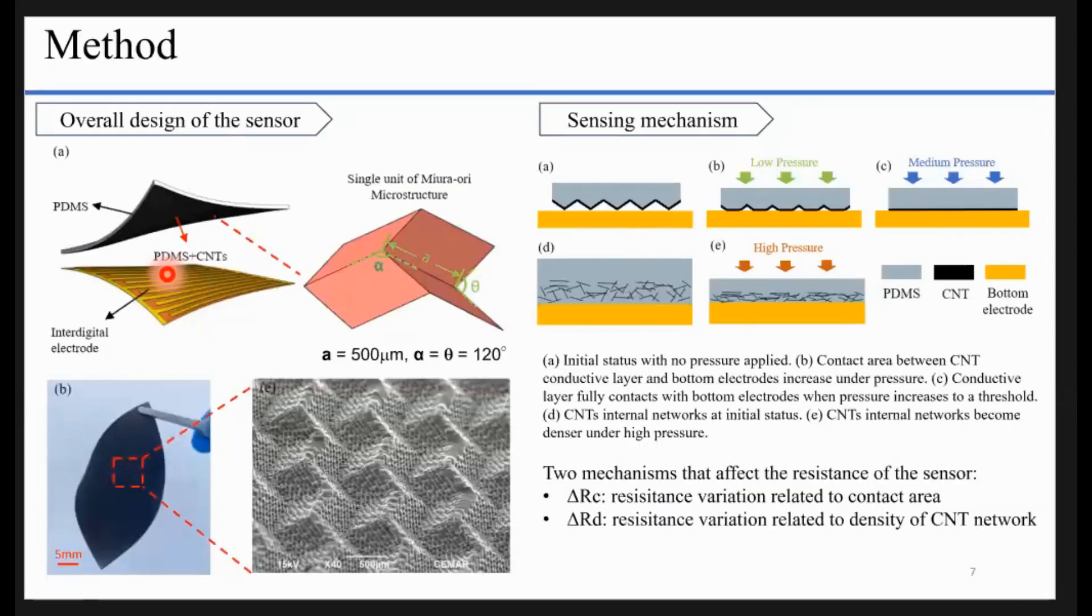Here shows how we apply Miura-ori structure into our sensor. The sensor has two layers. The bottom layer is the interdigital electrode, and the upper layer is the PDMS, which is silicon, a flexible material, with a microstructure on the surface. The pink one is the single unit of the Miura-ori structure. We can see the microstructure array clearly under the SEM. This design is quite straightforward.